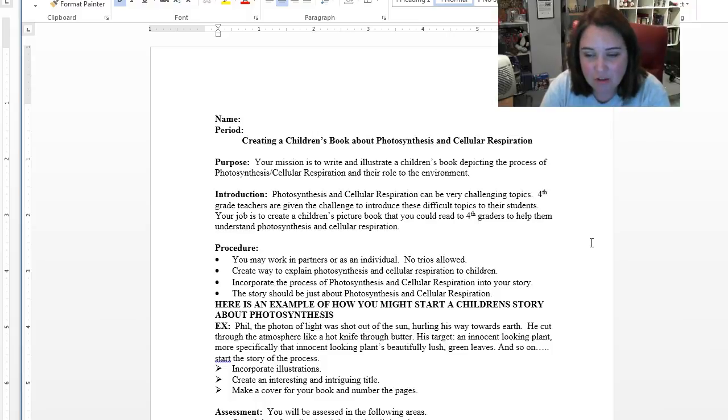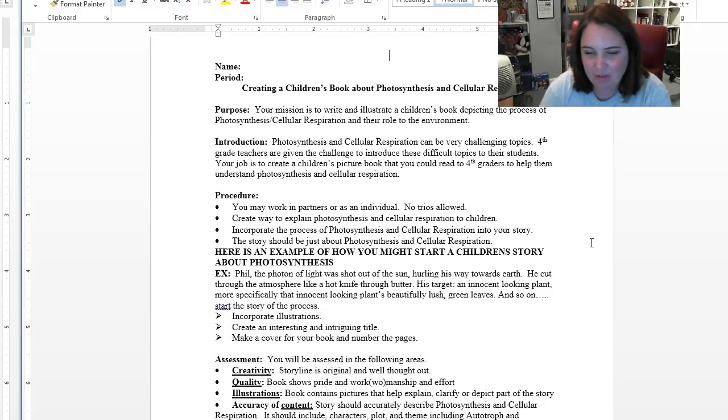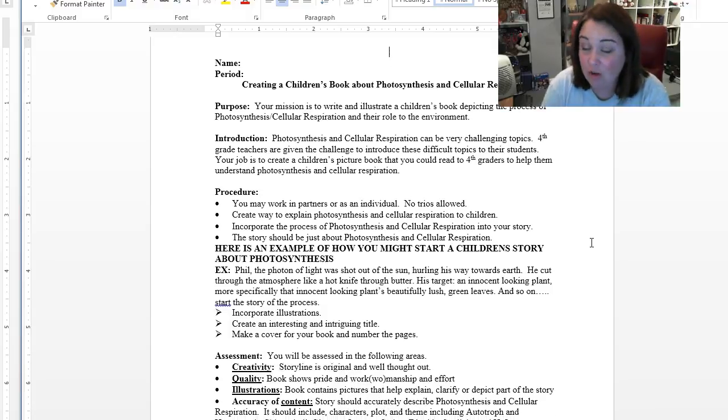And who knows? We could video them and send them over to Legend fourth graders to help them understand photosynthesis and cellular respiration. So it says you may work in partners or as an individual. There are no trios, so groups of one or two. Create a way to explain photosynthesis and cellular respiration to children. So you're going to have to kind of tear back the vocabulary. Incorporate the process of photosynthesis and cellular respiration into your story. And the story should just be kind of focusing on that photosynthesis. So I gave this lovely introduction that theoretically, I mean, you could use this introduction and then just go from there. It says, Phil, the photon of light, was shot out of the sun, hurling his way towards the earth.